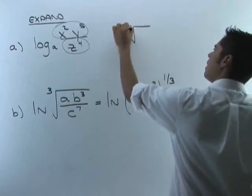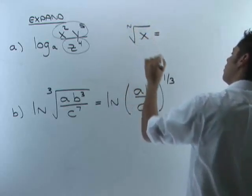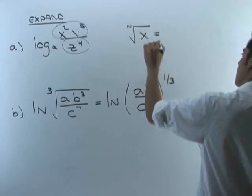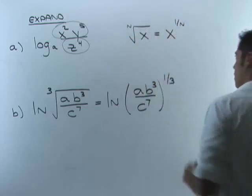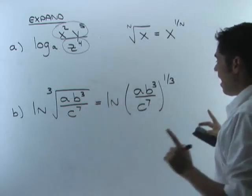That just comes back to this rational exponents thing that says that the nth root of x is x to the one over n. So just remember that. That's why I'm converting this.